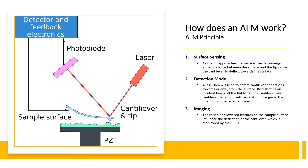A position-sensitive photodiode, or PSPD, can be used to track these changes. Thus, if an AFM passes over a raised surface feature, the resulting cantilever deflection and the subsequent change in direction of the reflected beam is recorded by the PSPD. The third principle is imaging. An AFM images the topography of a sample surface by scanning the cantilever over a region of interest. The raised and lowered features on the sample surface influence the deflection of the cantilever, which is monitored by the PSPD. By using a feedback loop to control the height of the tip over the surface, thus maintaining a constant position, the AFM can generate an accurate topographic map of the surface features.